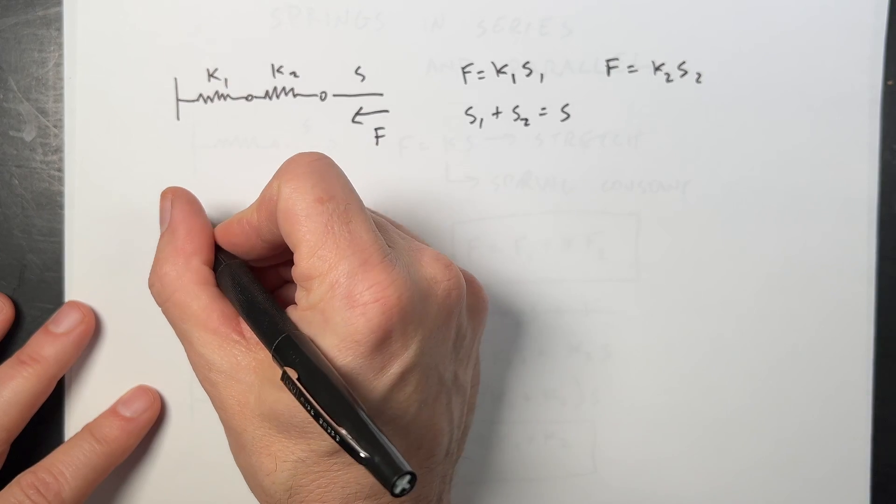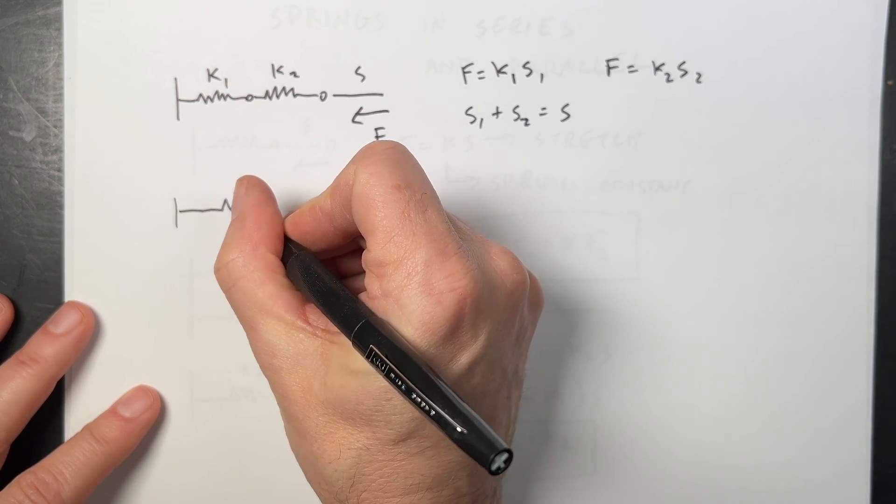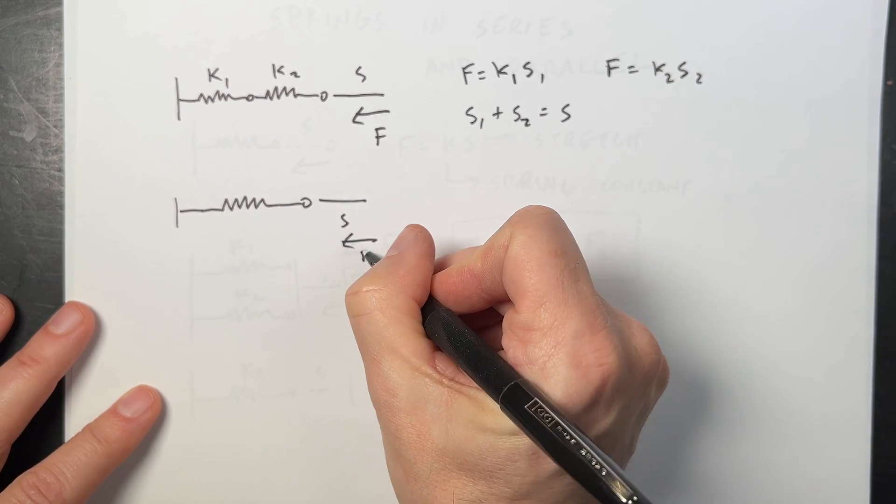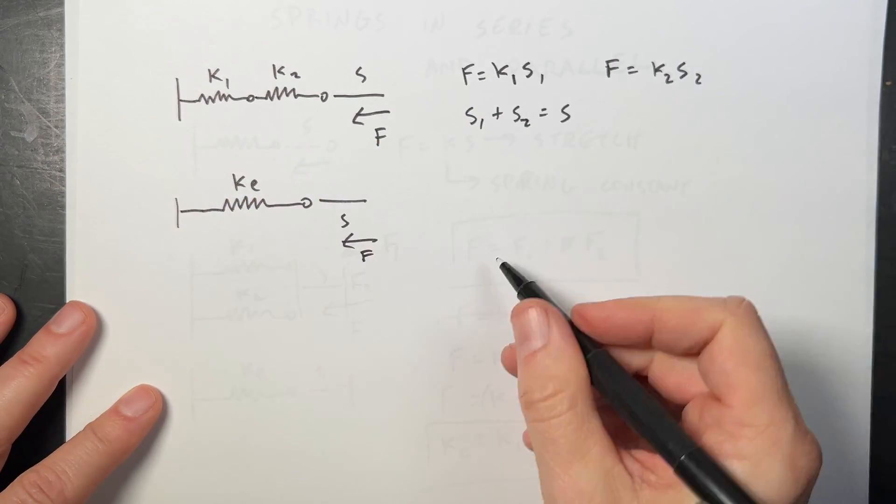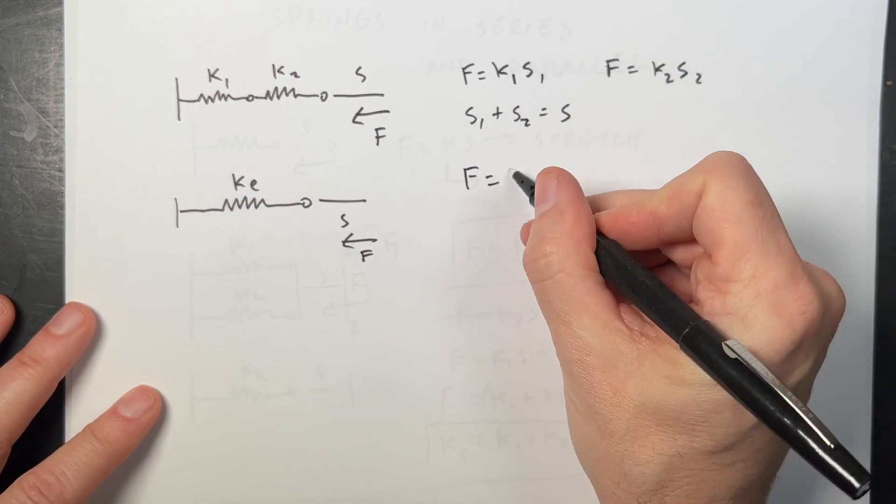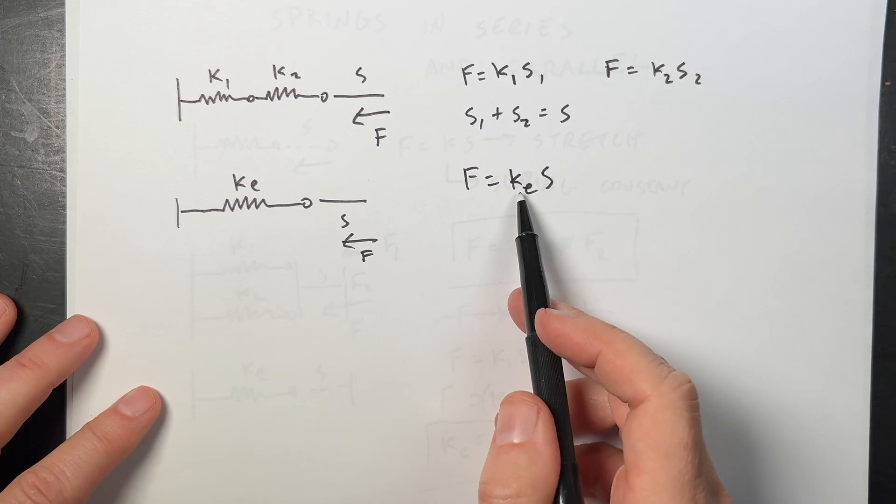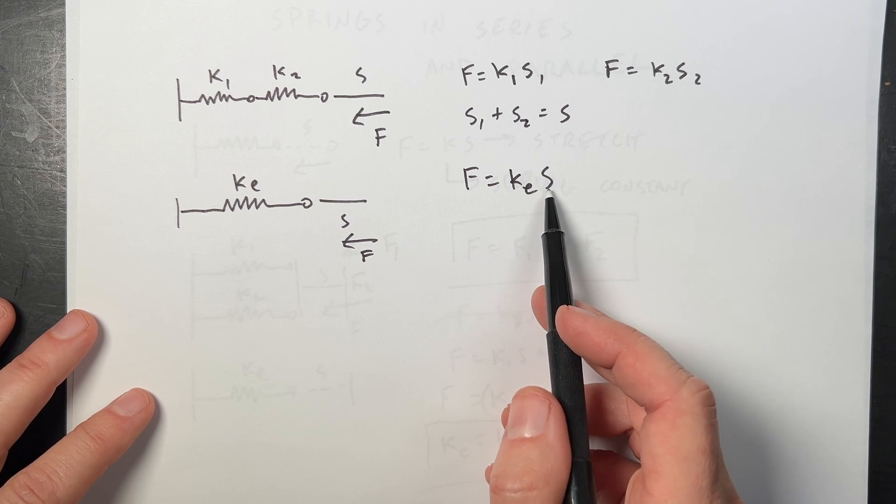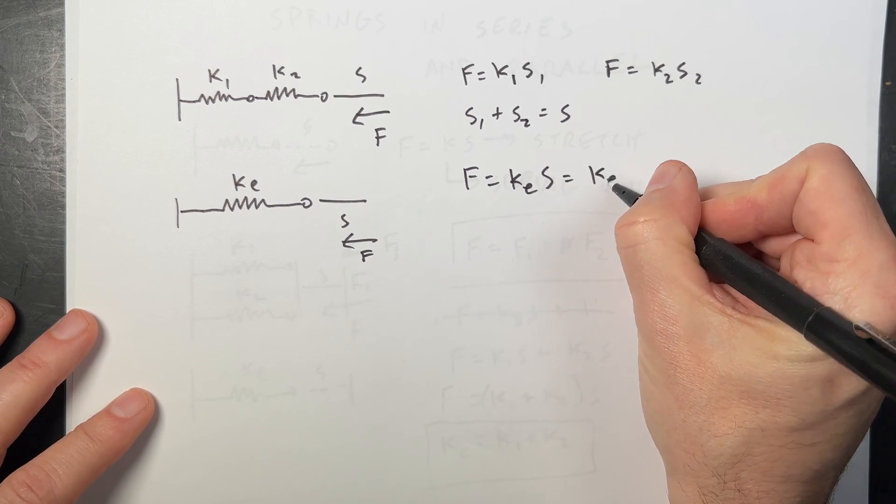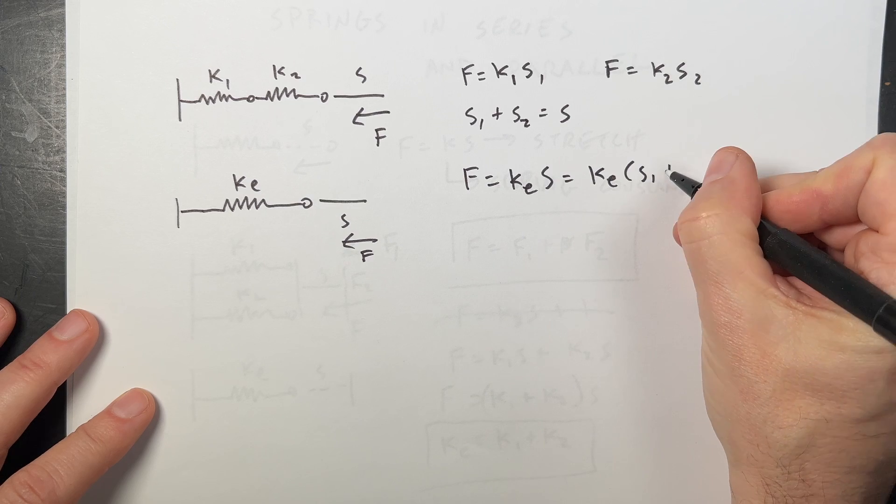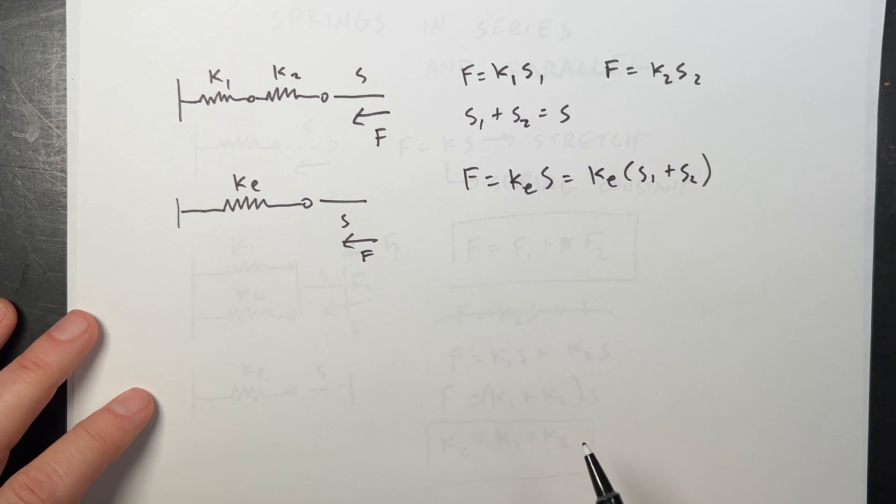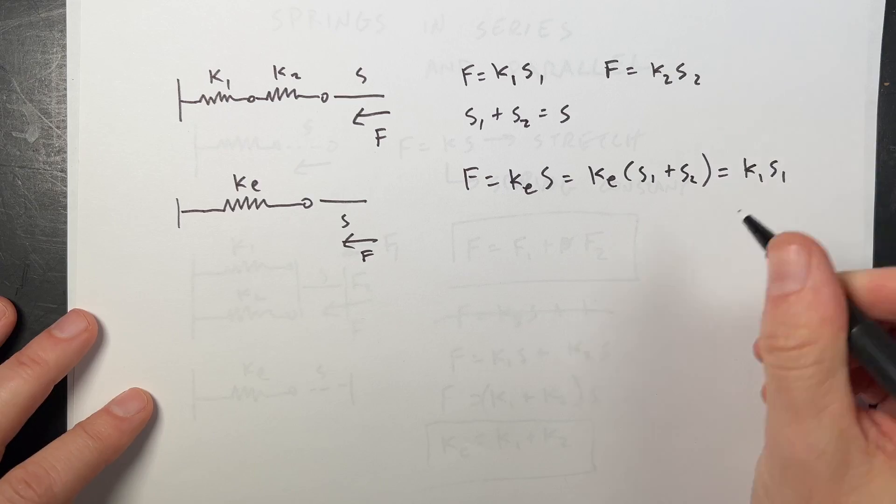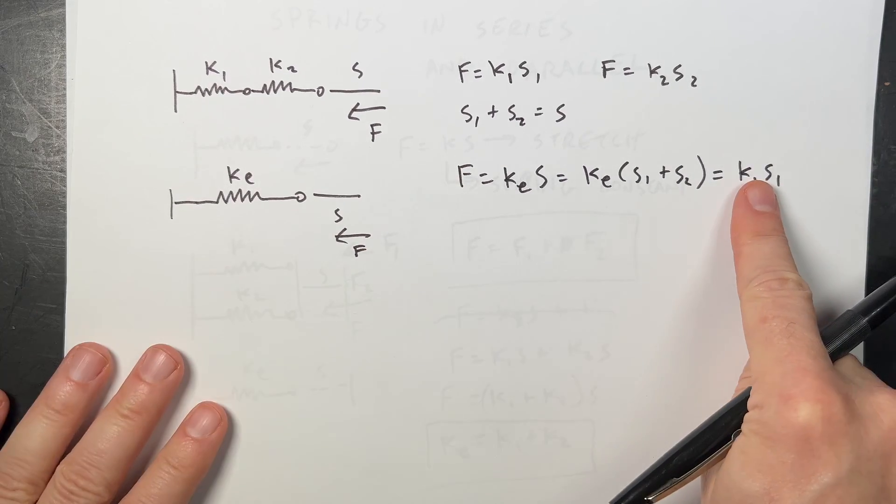So let's replace this with a single spring. And it's going to stretch the distance S. It's going to have a backwards force F, and this is just K equivalent. So in this case, I can write F is equal to K equivalent times S. And that's what I want to find, that K equivalent.